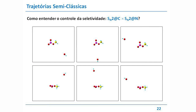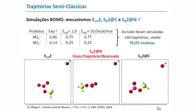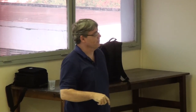A única trajetória que observamos com substituição no nitrogênio está aqui — ela faz um giro e adiciona no nitrogênio. Vem a hidroxila, ela interage, tem essa rotação, interage e cai no campo eletrostático positivo do nitrogênio e se liga — aí ocorre a dissociação. Das 160 trajetórias que fizemos, 76,4% foram reativas. Quando fazemos as estatísticas, conseguimos reproduzir relativamente bem os resultados experimentais da seletividade.